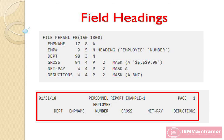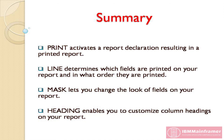This is the output report after adding the heading parameter. This is the end of this chapter. So far we discussed how the print statement works, and also how to use the mask and heading parameters to make your reports more readable. The summary of this chapter is: Print activates a report declaration resulting in a printed report. Line determines which fields are printed on your report and in what order. Mask lets you change the look of fields on your report. Heading enables you to customize column headings on your report.